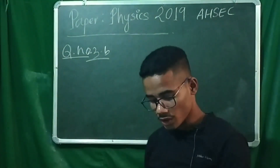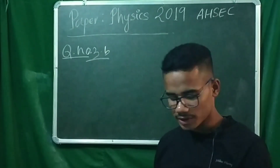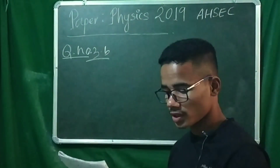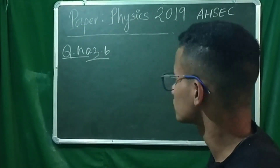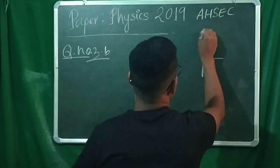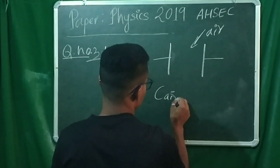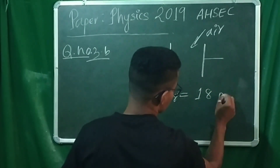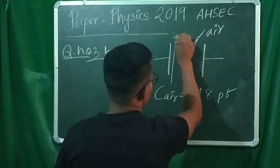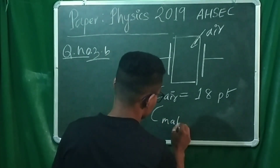Question number 3b: The capacitance of a parallel plate capacitor with air is 18 pF. When a dielectric material is inserted in the space between the plates, its capacitance becomes 108 pF. Find the dielectric constant of the material.